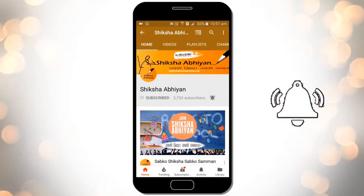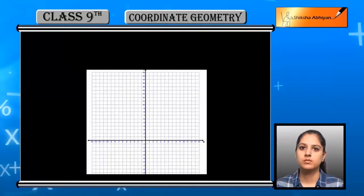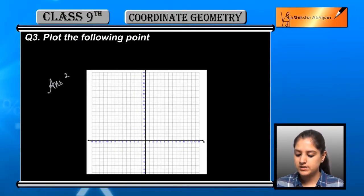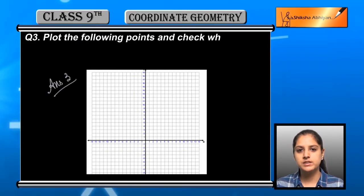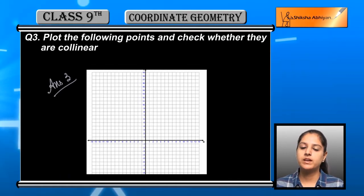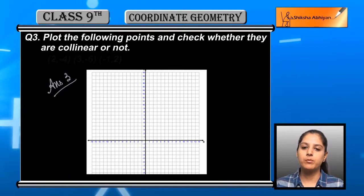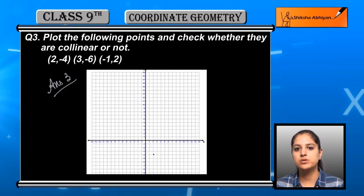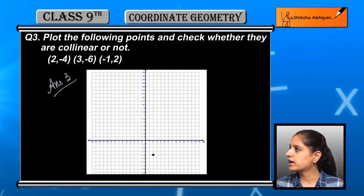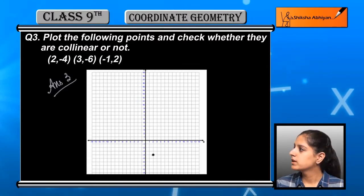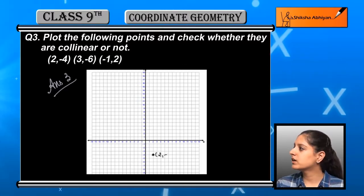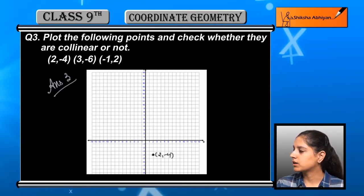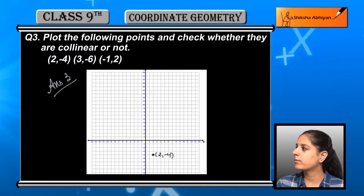The next question is: plot the following points on a graph paper and check whether they are collinear or not. We need to plot the given points and then determine whether those points are collinear or not. First, you have been given a graph paper — mark your axes and plot the first point, which is (2, -4).